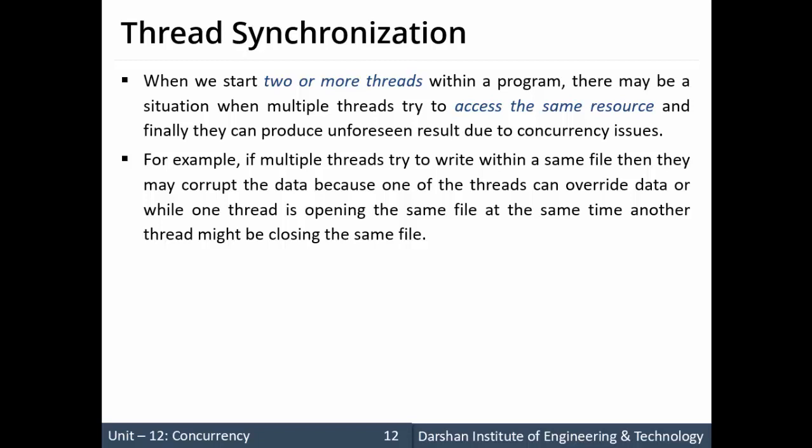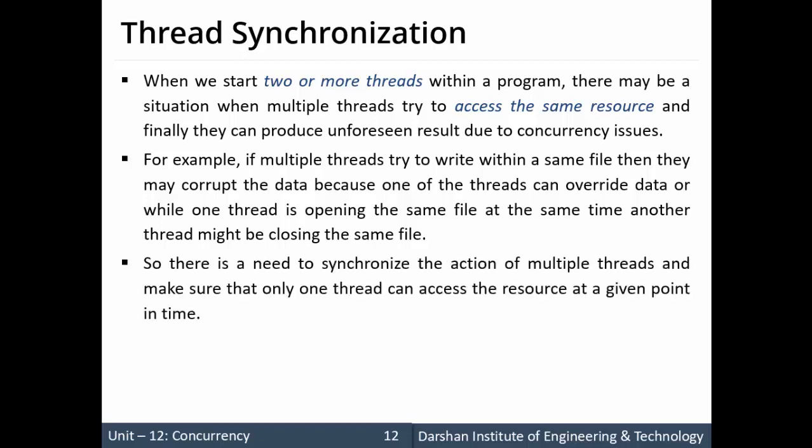For example, if we try to write to the same file using different threads, it may happen that one thread can override the data of another thread in the same file at the same time. Before closing the file, the data may get corrupted because thread one has written something and it was overwritten by thread two. So synchronization does not take place between them. There is a need for synchronization when multiple threads access the same resource; if threads have different resources, there is no need for synchronization.